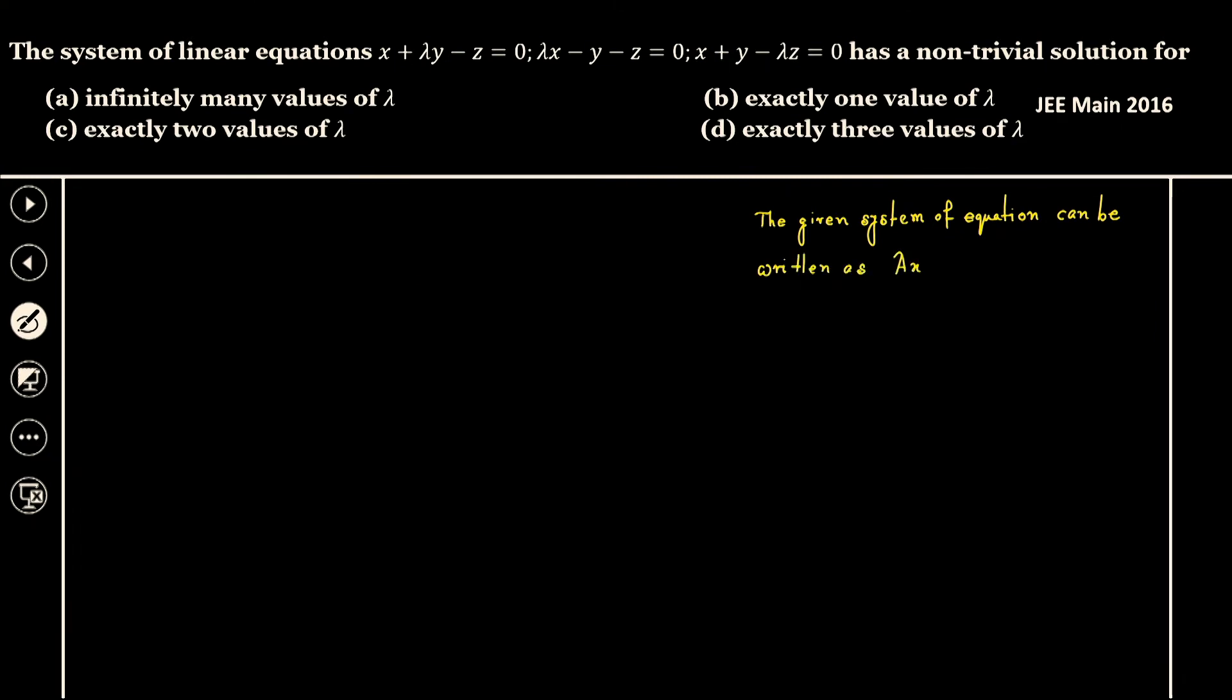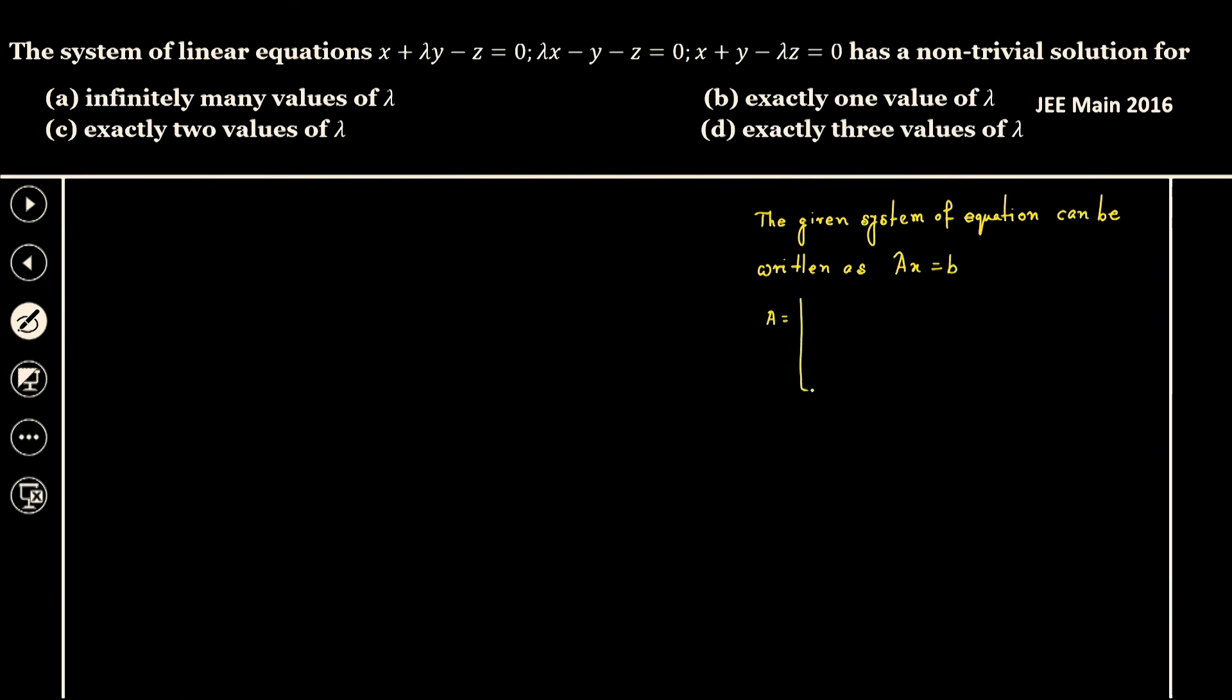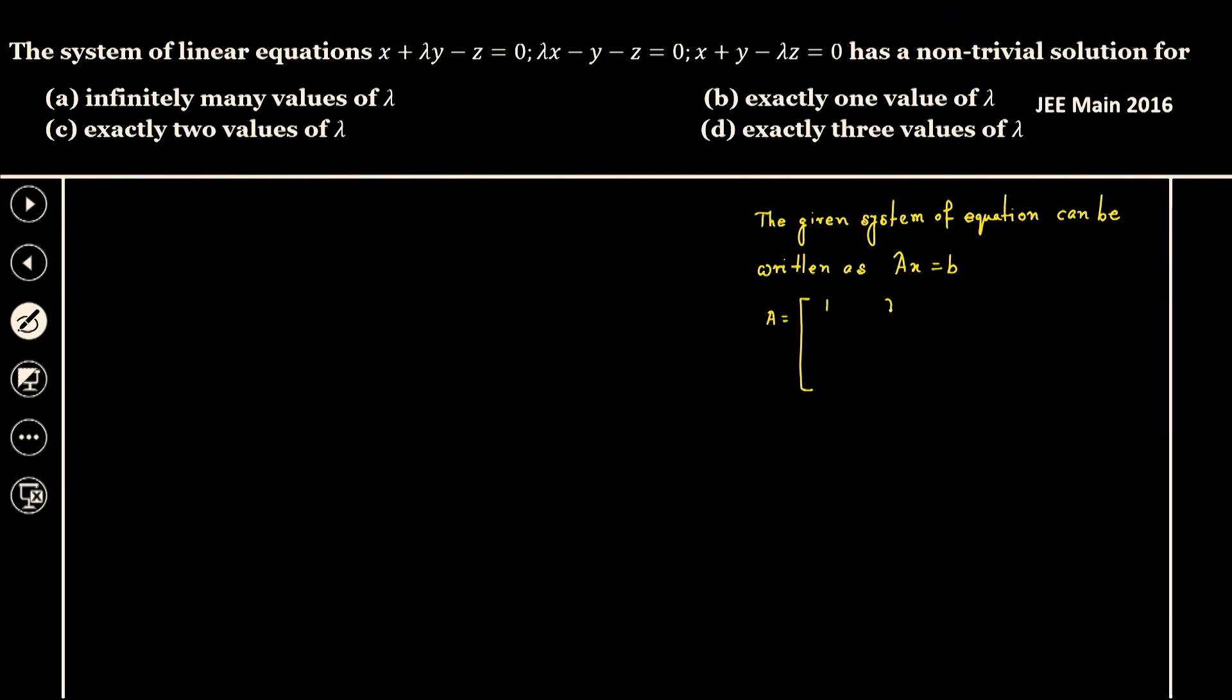Ax equals b, where the coefficient matrix A is equal to - let's write down: one, lambda, minus one; then we have lambda, minus one, and minus one; then we have one, one, minus lambda. That's it.